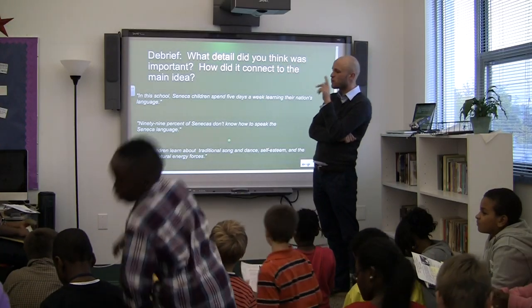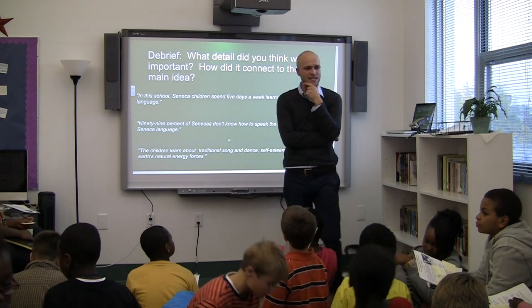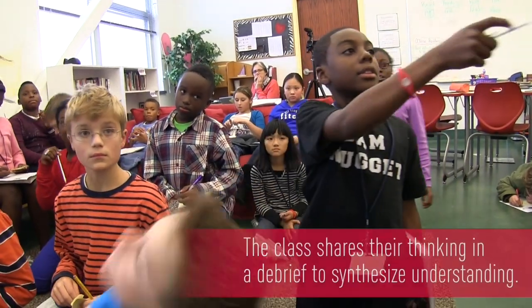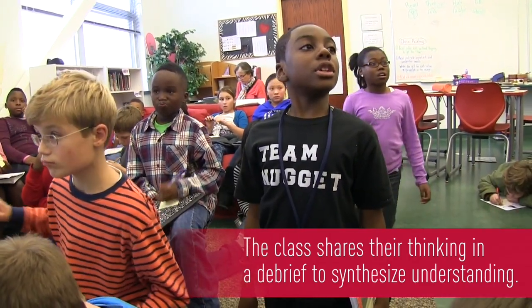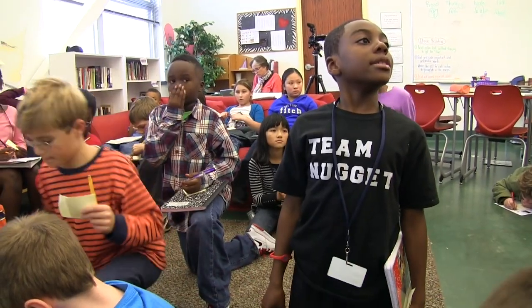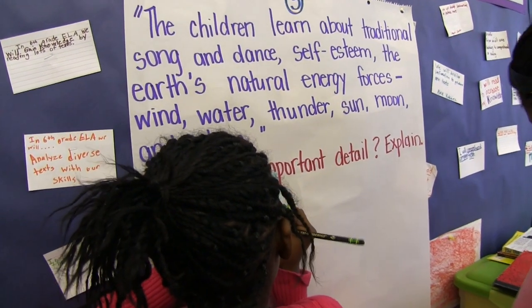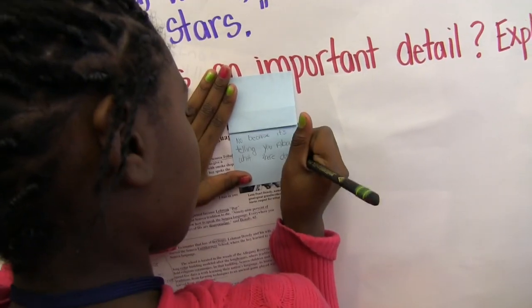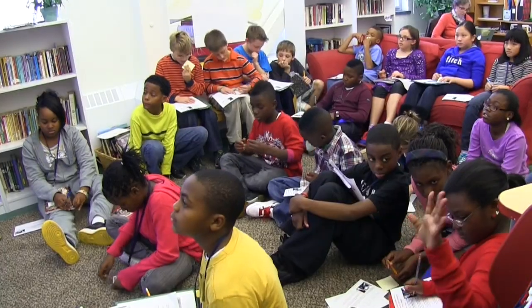I want to debrief with this question: What detail did you think was important? How did it connect to the main idea? The one about the children learning about traditional songs. One of the details I thought was important was that some of the Seneca traditions are like singing and dancing. I thought that was an important detail because it tells you the tradition.